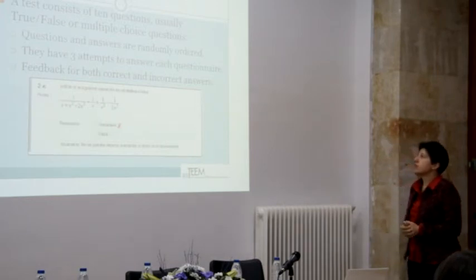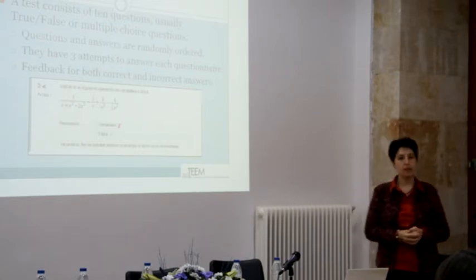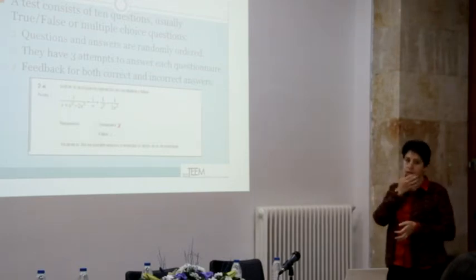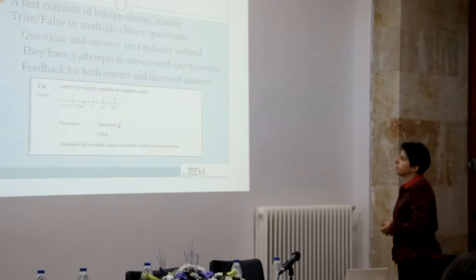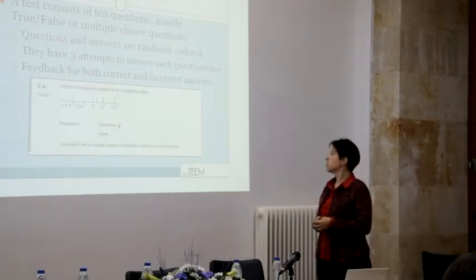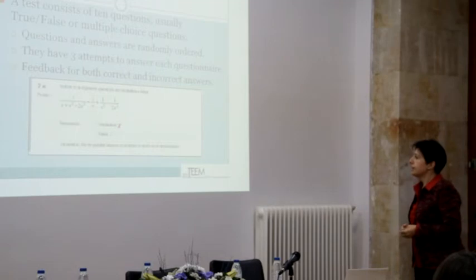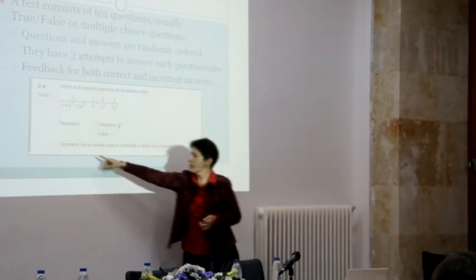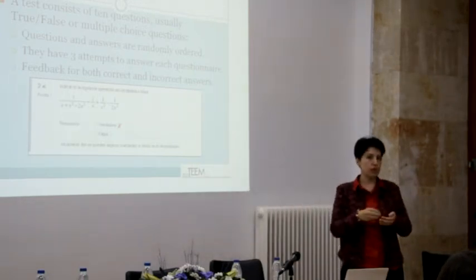The test consists of ten questions. The questions are randomly ordered. There are true/false questions and multiple choice questions. It's very difficult to write mathematics using a computer without a proper tool, so students have to say true or false or choose an expression. They have three attempts to answer the questionnaire, and the score is the best of the three attempts. They receive feedback for both correct and incorrect questions.